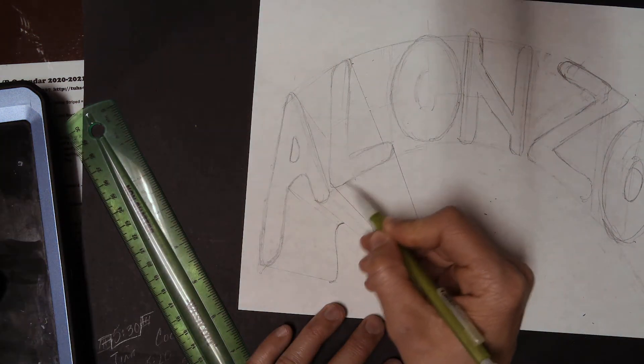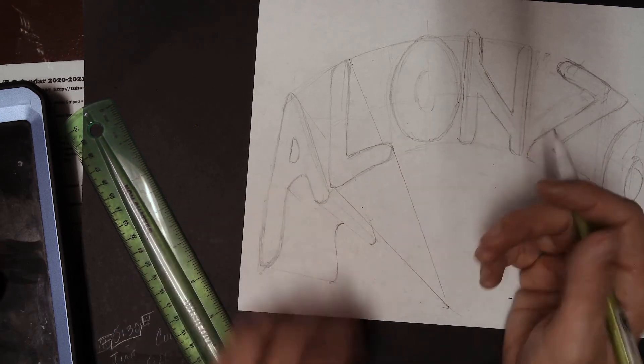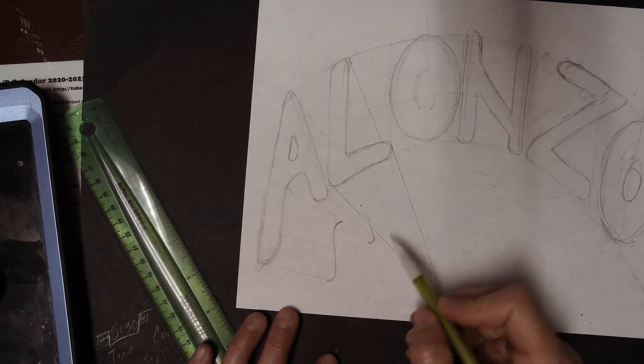The L is in front of the A in this case, so we'll erase the parts of the one that is behind. Okay. So, then we have the arch of the L.